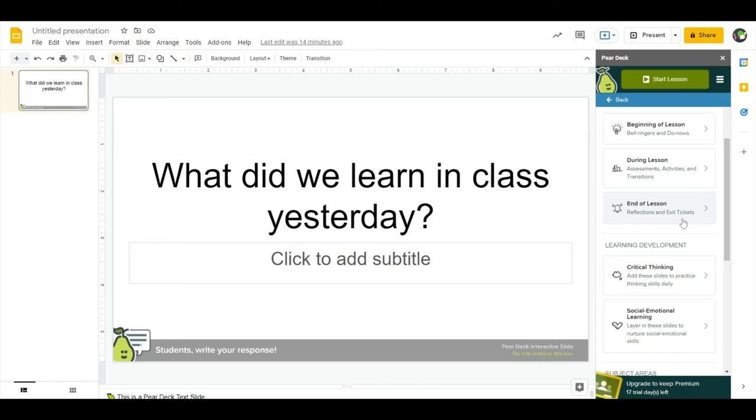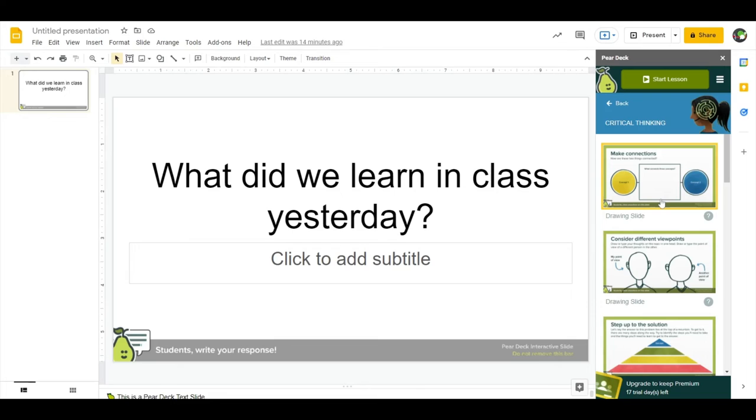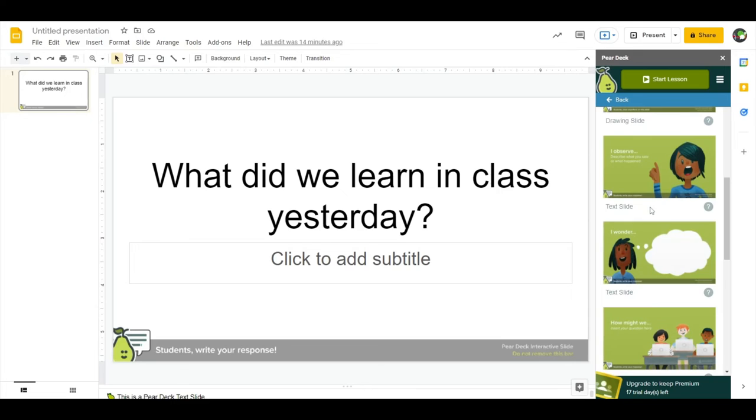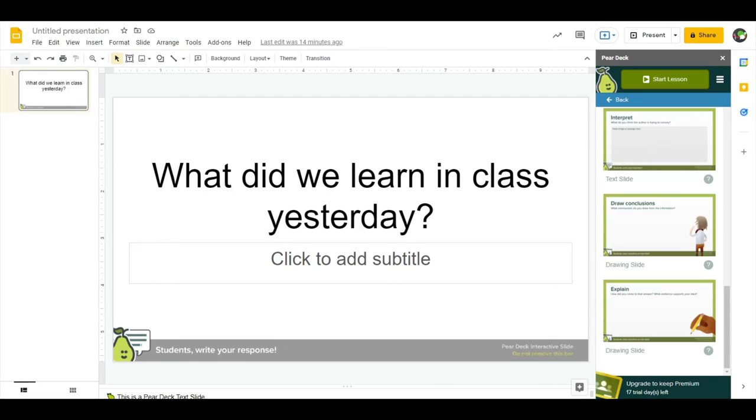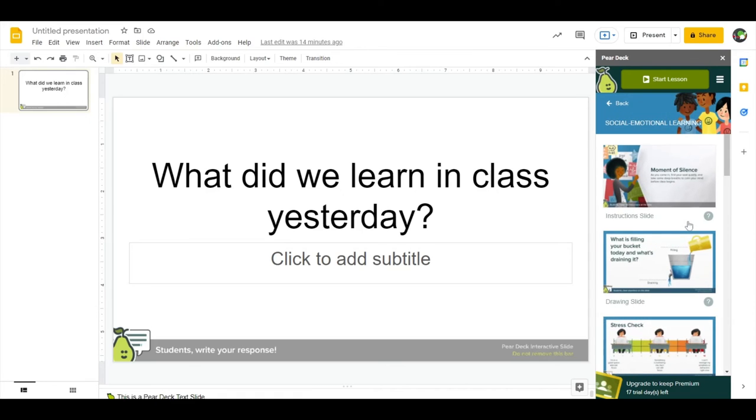Finally, the end of the lesson promotes reflection and offers exit ticket ideas so students can reflect and remember what went on. My favorite part is the learning development templates. Here you can see there's a whole section devoted to critical thinking. If you take a look and explore these, it gets you to get your students to make connections between ideas. Consider viewpoints. They're able to describe what they observe or wonder. There's a lot of great things here to allow students to explain and draw conclusions. The other one is social-emotional learning. I know this was a struggle for many teachers during distance learning to help their students socially and emotionally. This is great for students to describe how they are or provide a moment of silence.